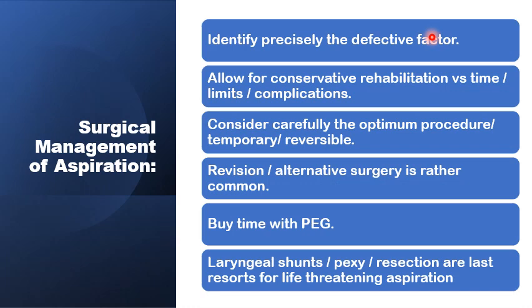An important factor in the choice of surgery for aspiration is the precise identification of the defective factor in swallowing — for example, glottic incompetence, failure of high laryngeal elevation or anterior displacement during swallowing, tongue base factors, loss of laryngeal sensation, cricopharyngeal dysfunction, or any combination of these factors. This should be precisely identified prior to embarking on any surgical intervention.